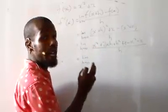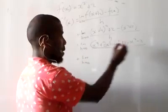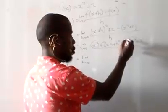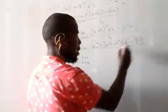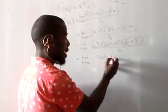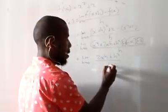Now, you are going to look for like terms. You have x² and negative x², subtract each other. You have positive 2 and negative 2. They cancel each other. Then you are left with 2xh + h² all over h.